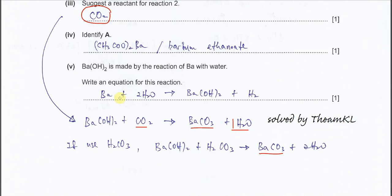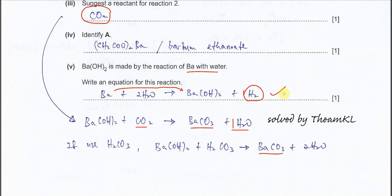Part 5: barium hydroxide is made by reaction of barium with water — write the equation. The solid dissolves, gas is produced, because barium is a Group 2 element. Once it dissolves, it forms barium hydroxide and simultaneously releases gas. This equation is the same for all Group 2 elements reacting with water, but barium has the highest rate — the fastest reaction compared to magnesium, calcium, and strontium. So this reaction is quite vigorous compared to others.